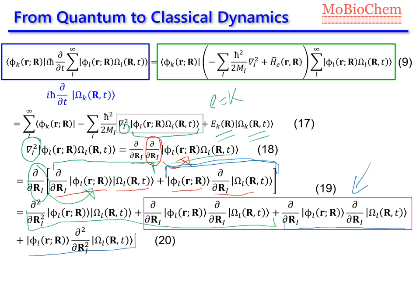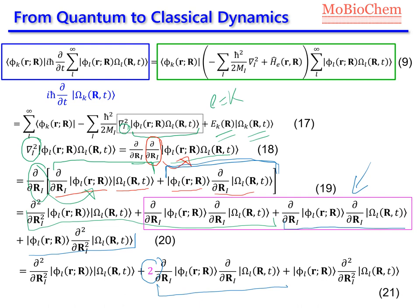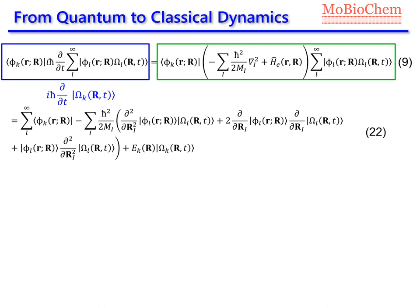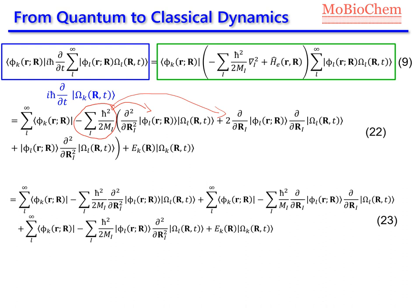Looking at the pink square, we have the derivative of the electronic wave function multiplied by the derivative of the nuclear wave function appearing twice, so we can write a factor of 2 times this term only once. We then insert equation 21 into equation 17 and get equation 22. Next, we multiply the square of the Planck constant over 2 and the mass by each of the terms in the parentheses, and we get equation 23.